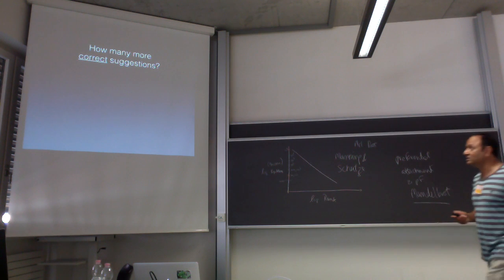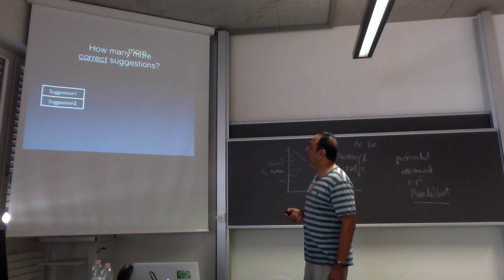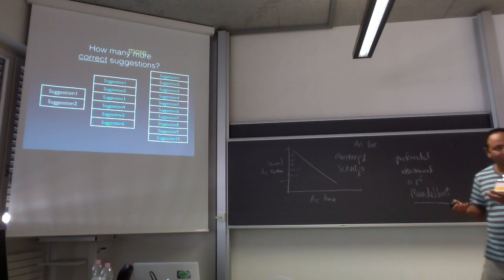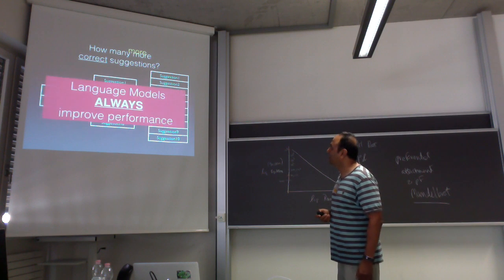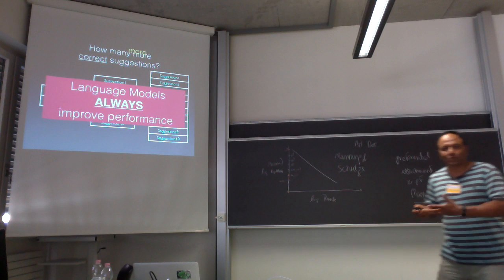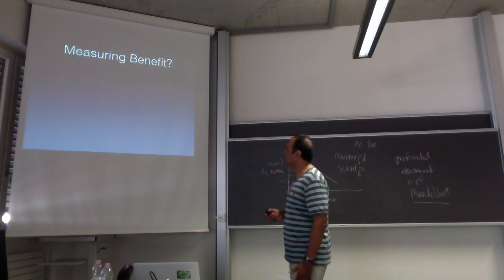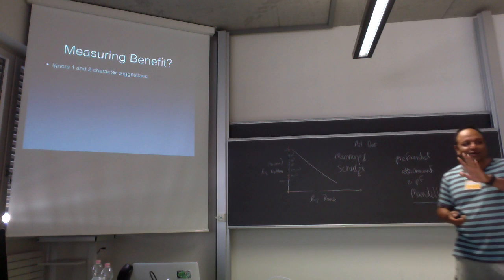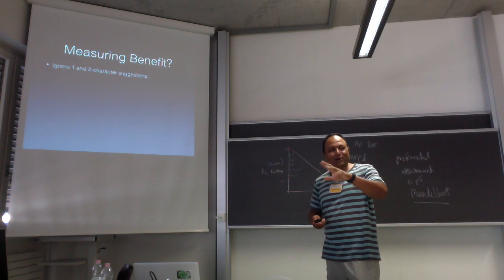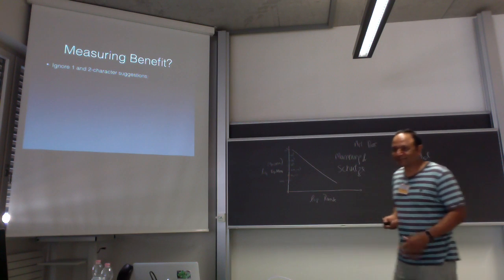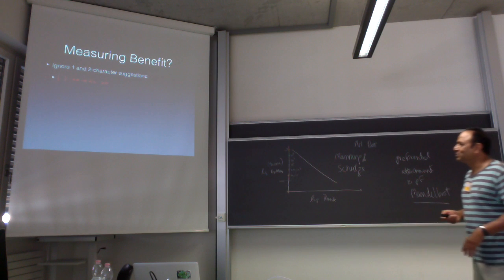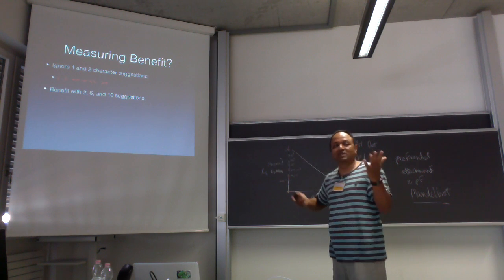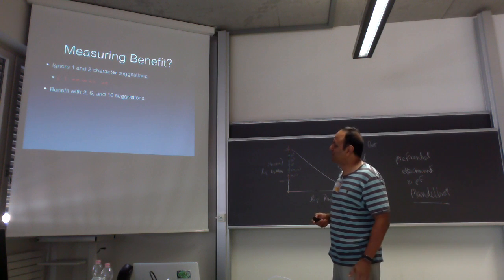The question is: how many additional correct suggestions are provided by combining Eclipse with n-grams, as opposed to just having Eclipse alone? We can do this with two suggestions, six suggestions, or ten suggestions — different levels of suggestion budget. We measure benefit by ignoring all one- and two-character suggestions like open parentheses or semicolons, since those don't really save you anything. We consider only suggestions of three or more characters.